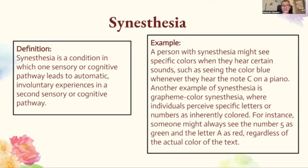Synesthesia is a condition in which one sensory or cognitive pathway leads to automatic, involuntary experiences in a second sensory or cognitive pathway. A person with synesthesia might see specific colors when they hear certain sounds, such as seeing blue whenever they hear the note C on a piano. Another example is grapheme-color synesthesia, where individuals perceive specific letters or numbers as inherently colored — someone might always see the number five as green and the letter A as red, regardless of the actual color of the text.